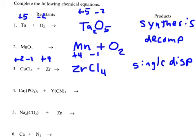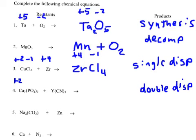Now let's look at the next one. We've got a compound called calcium phosphate and one called euterbium cyanide. So I have two compounds reacting together — a positive and a negative and a positive and a negative. This is what's known as a double displacement. I'm going to look up their numbers: calcium is a plus 2, phosphate is a minus 3, euterbium is a plus 3, and cyanide is a minus 1.